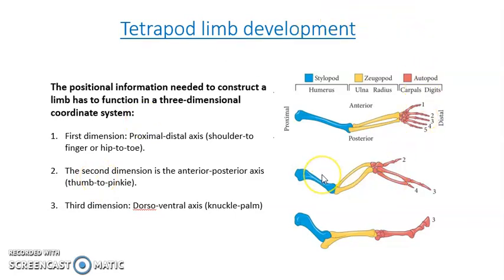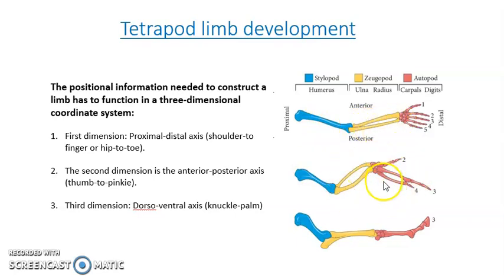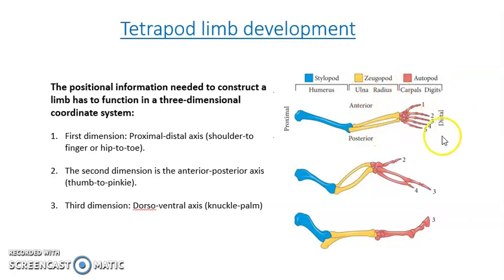This figure shows the skeletal patterns of a limb: a human arm, a chicken wing, and a horse foreleg. The humerus region is called the stylopod, the radius-ulna region is called the zeugopod, and the digits are called the autopod. These three terms are important.